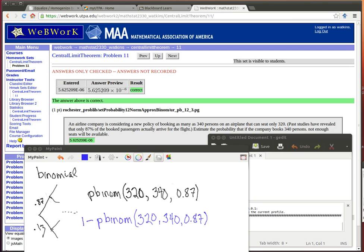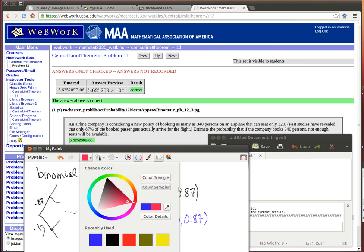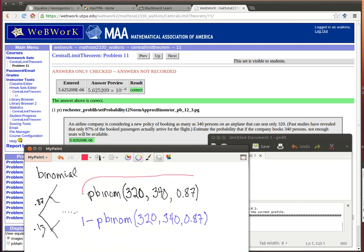So I could use the binom function in R. The pbinom of 320, that's how many seats are available, and the size of the experiment that we're doing here is 340 because we're looking at 340 different people, and the probability that any one of them is going to actually show up is 0.87. So this particular amount that we're looking at here is really the probability that we will have enough seats. So 1 minus that probability will be the probability that we don't have enough seats.